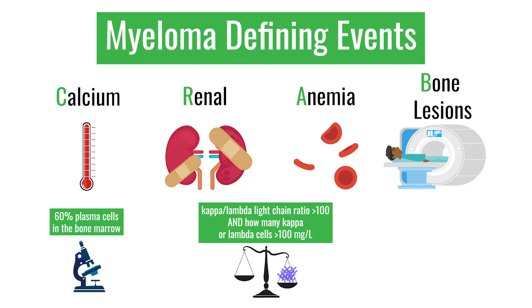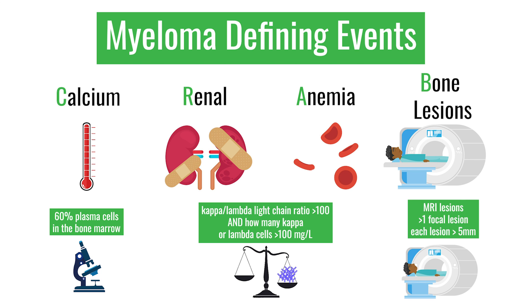The second additional myeloma defining event involves the free light chain ratio. We measure serum free kappa and free lambda light chains. If the patient has kappa light chain type myeloma, the ratio of kappa to lambda should be more than 100, and the kappa light chain level itself should be more than 100 milligrams per liter.